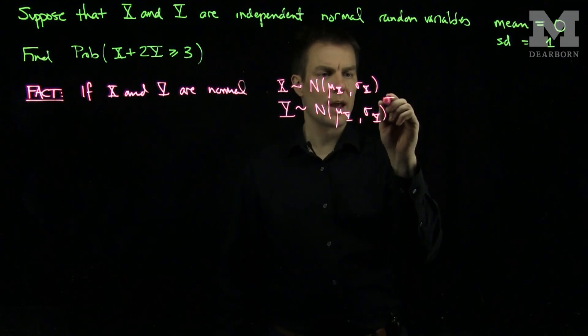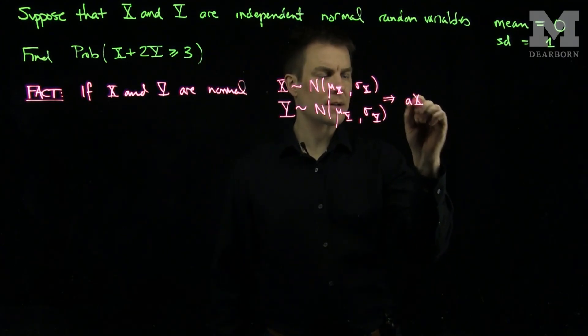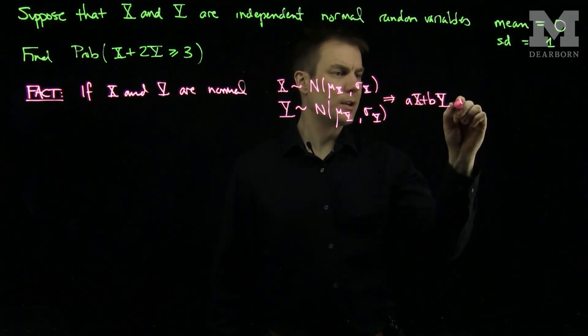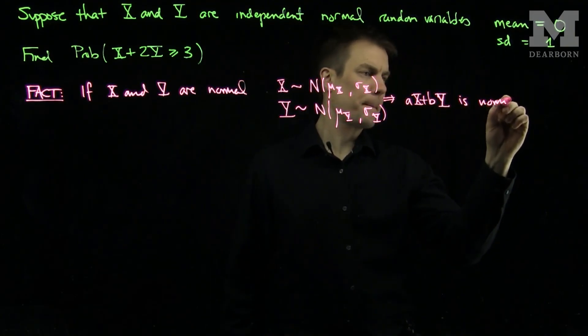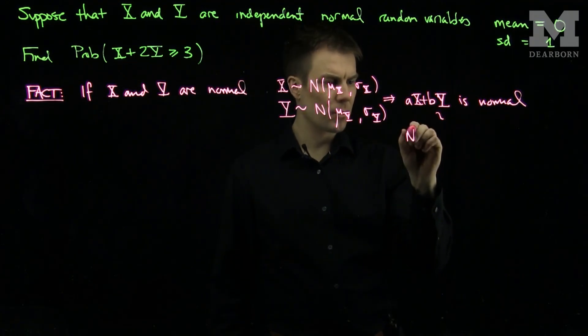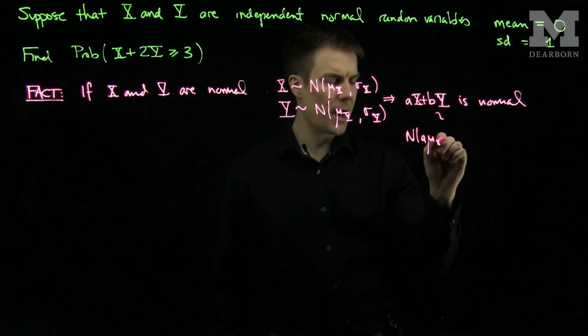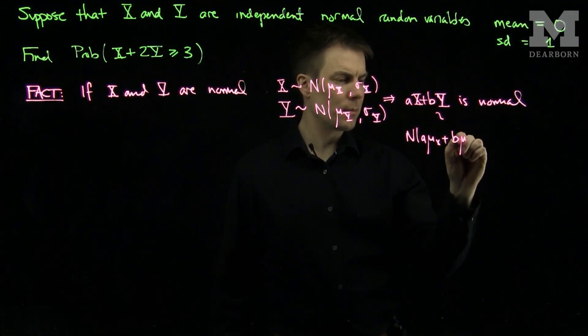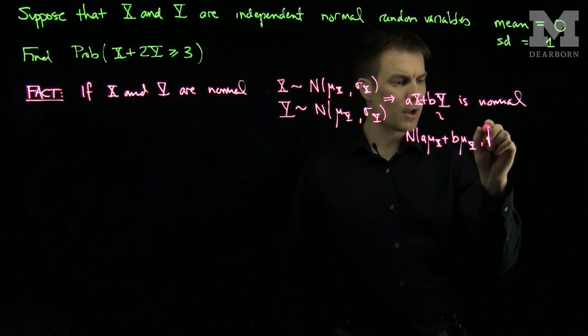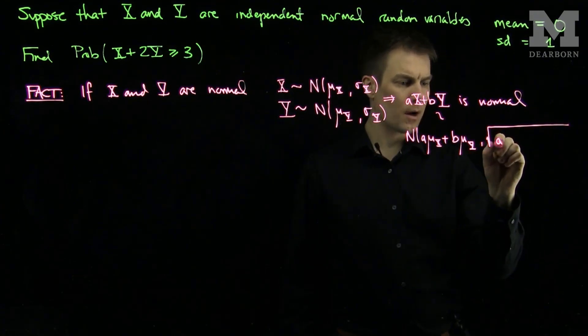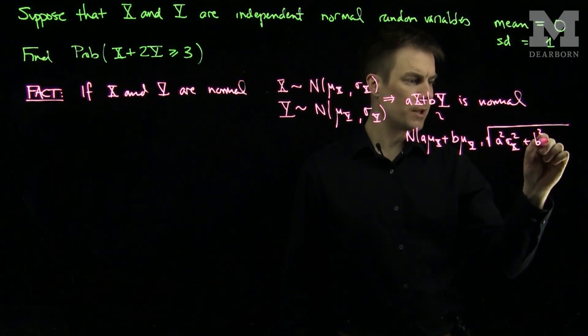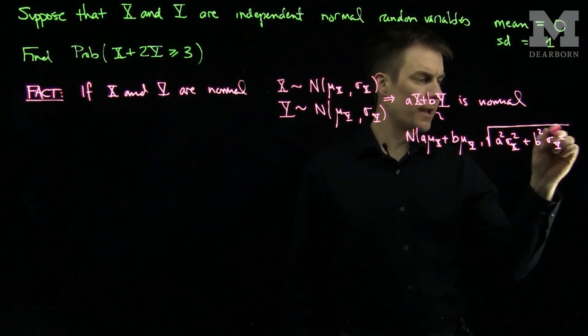Then this implies that aX plus bY is normal with which parameters? The parameters will be aμₓ plus bμᵧ, just a linear combination of the means, and then the standard deviation will be the square root of a²σₓ² plus b²σᵧ².